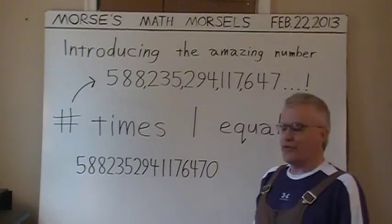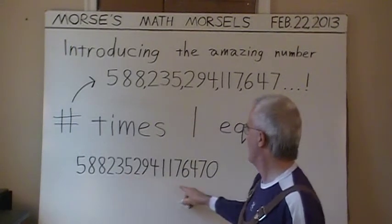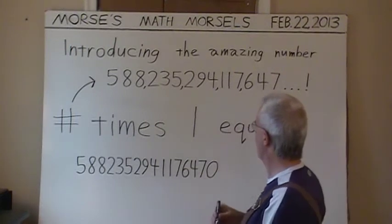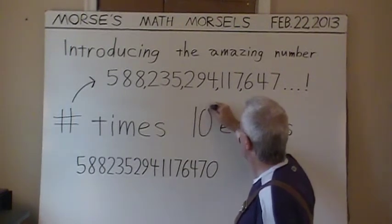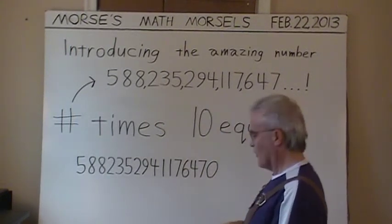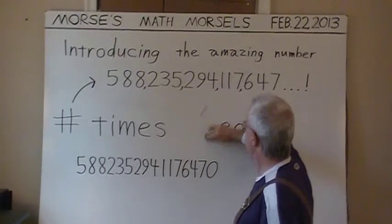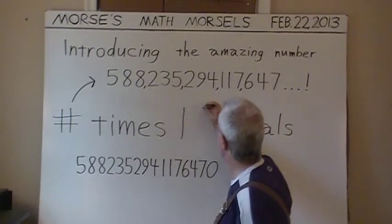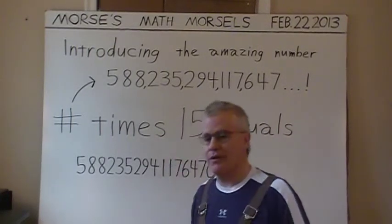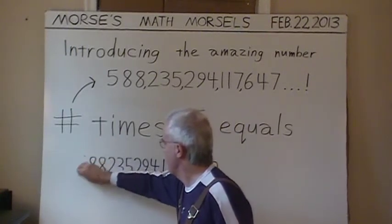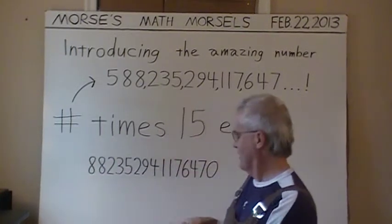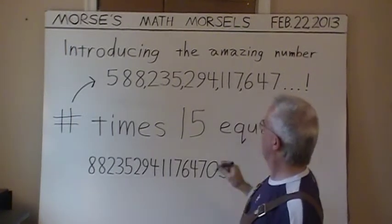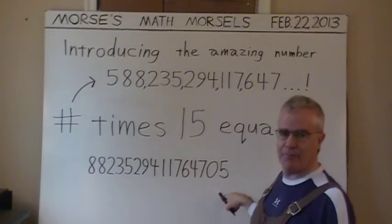To multiply by 15: note the new number made by moving the 0 from the left to the right — that's 10 times the original number. Now erase the 10 and write in 15. I'm going to grab the next digit from the left side, rub it out, and move it to the right side. This number times 15 equals this new number.